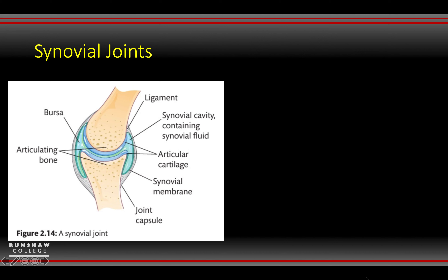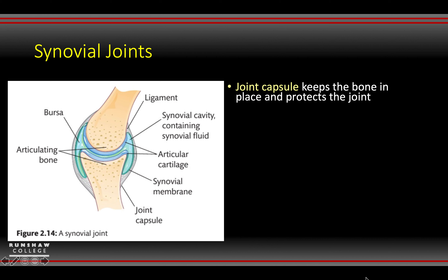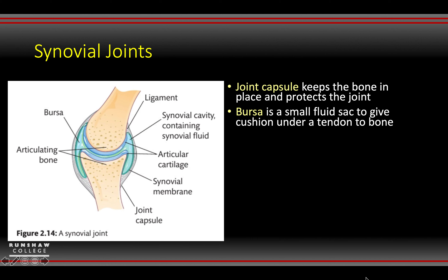You may be asked to label certain things on a synovial joint. Your joint capsule just keeps everything together and protects the joint — it holds everything in. Then you've got your bursa, which is a really small fluid sac, a bit like a cushion, that can sit underneath a tendon to allow freer movement.